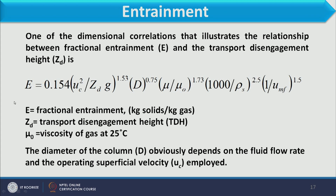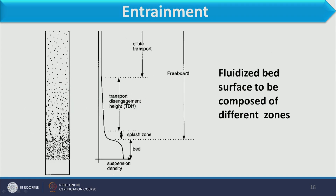Considering all these parameters, we can calculate how much fractional entrainment is occurring, or if we know the fractional entrainment — say 0.001 or 0.005 — we can calculate the required transport disengagement height. Looking at the figure, we can see different sections: the distributor plate, the bed height, the splash zone where particles move up and fall down, the transport disengagement height, and dilute transport — all these sections fall within the freeboard section of the column.